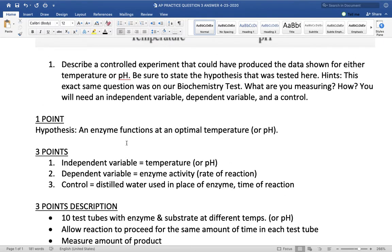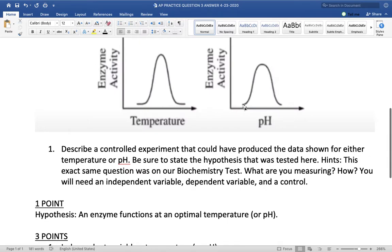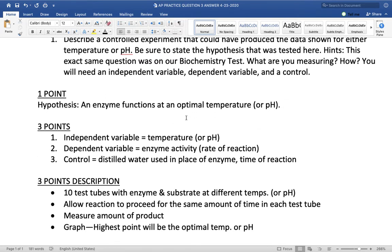And, obviously, we should get a range of products. From little product at low temps and high temps, little product at low pHs and high pHs, and then a lot of product somewhere in the middle temperatures or the middle pHs. And then you can graph it. And the highest point of your graph will be the optimal temperature or the optimal pH. To get the full points from the College Board, you would need all of these items. And that's review question number three.